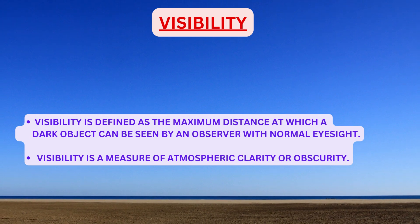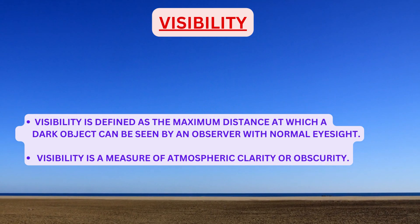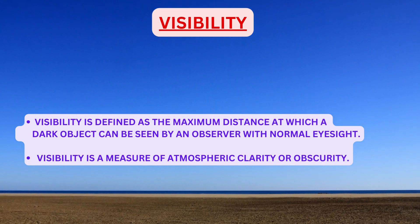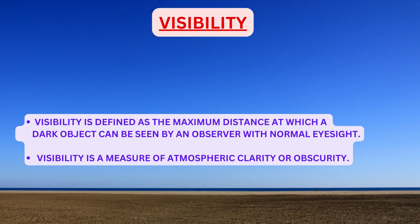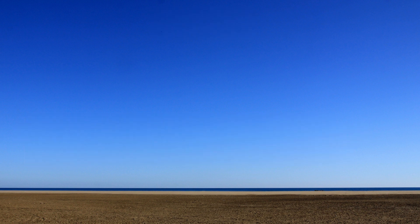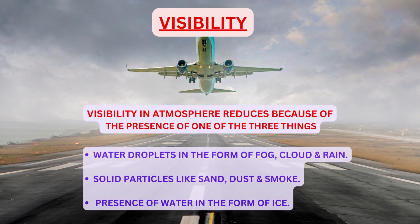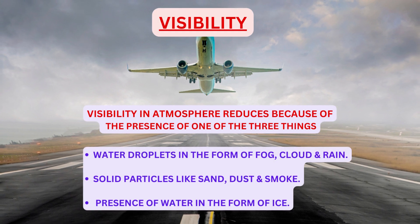Visibility is defined as the maximum distance at which a dark object can be seen by an observer with normal eyesight. Visibility is a measure of atmospheric clarity, or you can also say atmospheric obscurity. Visibility in the atmosphere reduces because of the presence of certain elements.